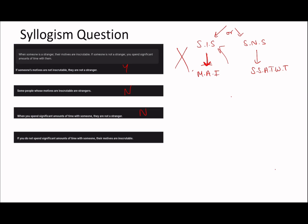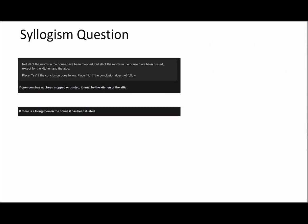'If you do not spend significant amounts of time with someone their motives are inscrutable.' If you do not spend significant time with them, that means you can't be on the right-hand side — the non-stranger side — so you must be on the left-hand side, meaning their motives must be inscrutable. The key point with these questions is: ask yourself how you were thinking and how you should have been thinking. It's fine to get questions wrong in practice as long as you're not making the same mistakes repeatedly. Try to understand where the answer is coming from, and combine your arrow diagram method.